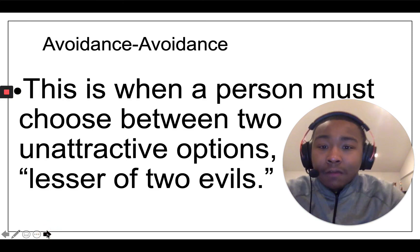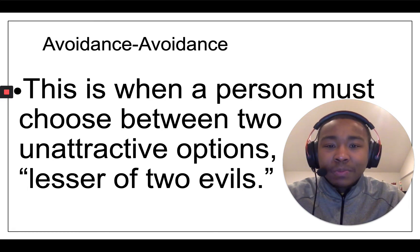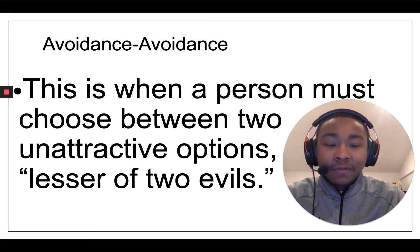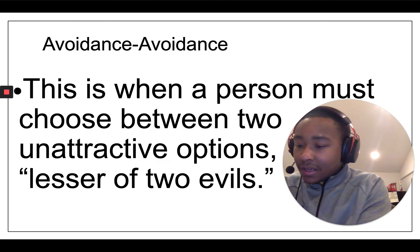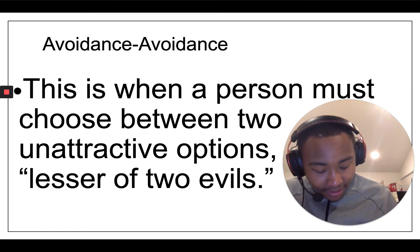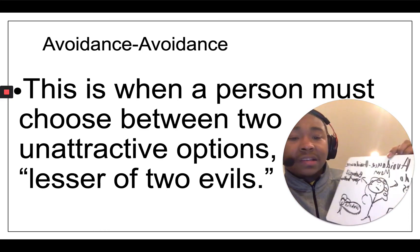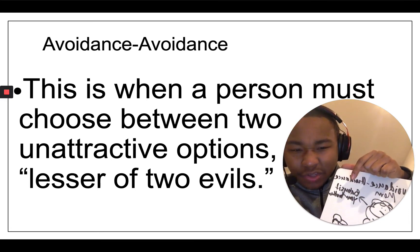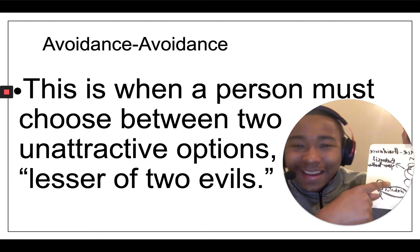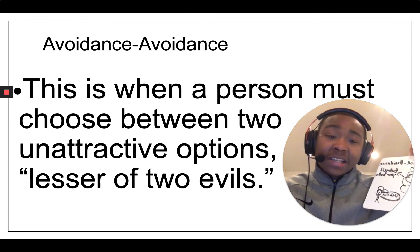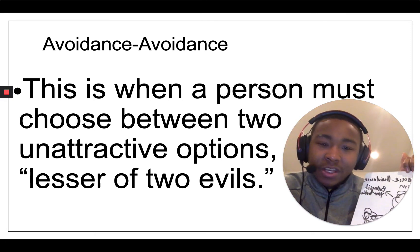The other conflict is avoidance-avoidance — this is when there are two unattractive options, the lesser of two evils. In the 2016 election, a lot of people said it's the lesser of two evils — that would be an example. In my picture, mom gives you two choices: you can either do the dishes or babysit your little brother. And you think, man, doing the dishes sucks, but he is annoying. Neither option really passes the vibe check, but you have to choose one because your mom isn't going to let you get away with it.